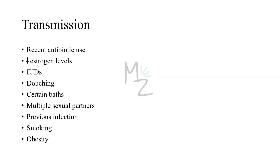There are certain risk factors that can increase the replacement of lactobacillus with Gardnerella vaginalis or the overgrowth of Gardnerella. These include recent antibiotic use — if a person uses antibiotics to treat a bacterial infection, they may be at risk of developing bacterial vaginosis — low estrogen levels, use of intrauterine devices (IUDs), douching, certain birth control methods, multiple sexual partners, previous infection, smoking, and obesity.